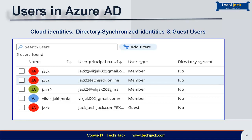Directory synchronized identities are users that exist in on-premises Active Directory. A synchronization activity that occurs via Azure AD Connect brings these users into Azure Active Directory, and their source is Windows Server Active Directory.